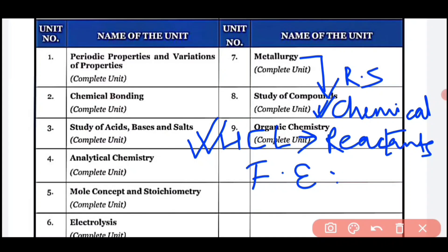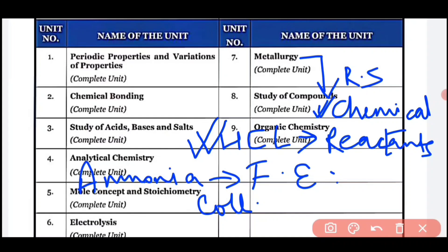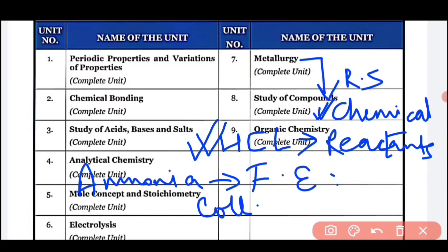The next important chapter is ammonia. Reactions are important — which reactants are used, how ammonia is collected — by upward or downward displacement — and what the drying agents are. MCQs can come regarding the drying agent used in the preparation of ammonia gas. Haber's process is very important in the preparation of ammonia, so look at Haber's process carefully.